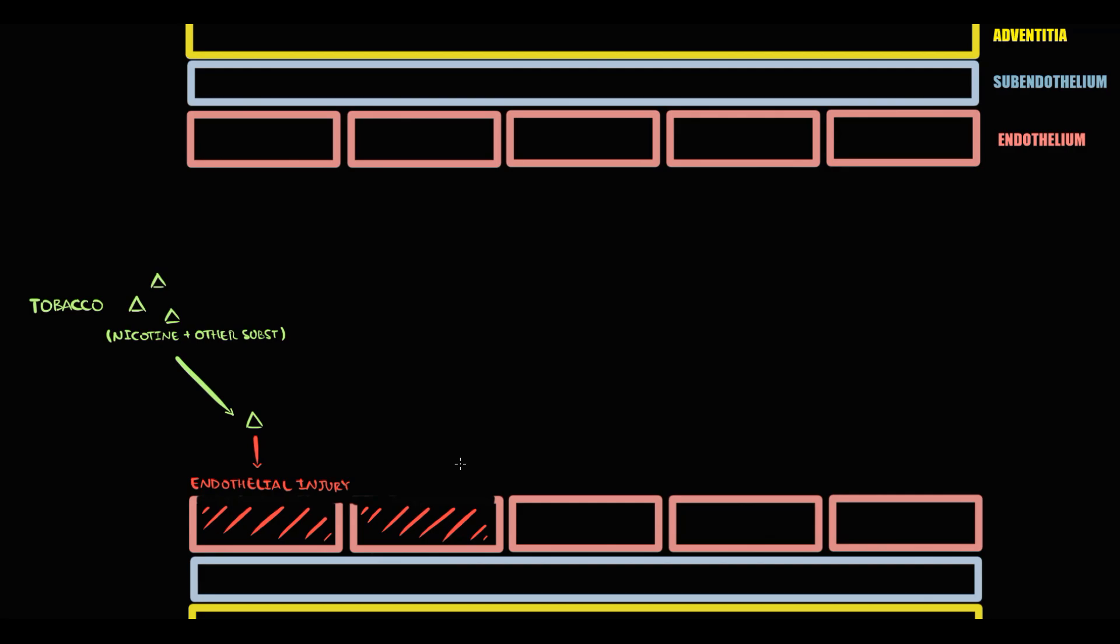It is important to note that nicotine and tobacco chemicals can cause endothelial damage in anyone, but the severity of this damage varies from person to person. Now let's assume that we have a predisposed individual who is particularly vulnerable to nicotine and tobacco chemicals. That's the first risk factor.